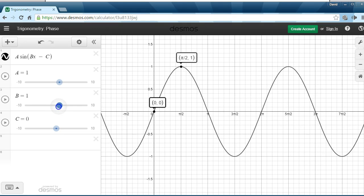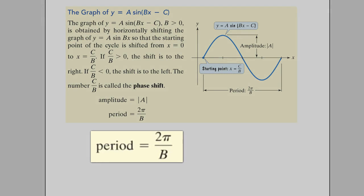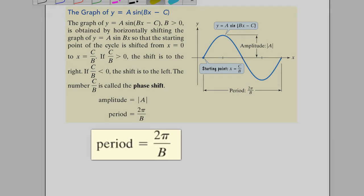So there is what B does. Because B is changing the period, altering the period of this thing. It's basically dividing the original period by whatever B is.